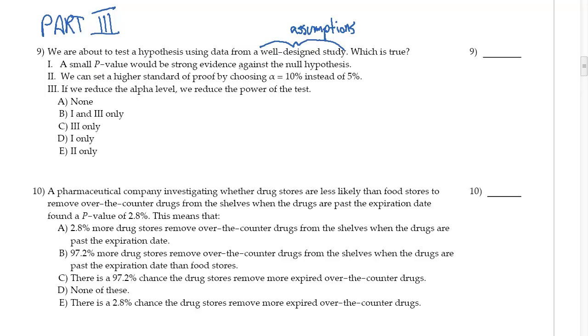Then we want to know which is true. A small p-value would be strong evidence against the null hypothesis, and this is true. A small p-value, when our p-value is less than alpha, then we reject the null hypothesis. We can set a higher standard of proof by choosing alpha 10% instead of 5%. Well, if we actually take alpha and move it from 5% to 10%, that means the p-value actually gets bigger, and so this is going to be false. That's not a higher standard, that's a lower standard.